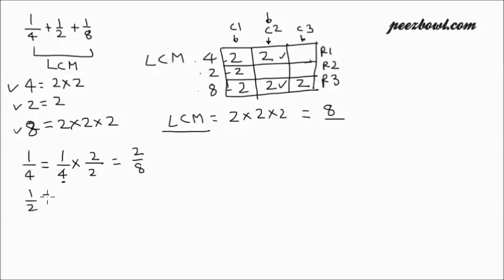Same way we will do for 1 upon 2. We are going to multiply with 4 upon 4. That way it will become 4 upon 8. And 1 upon 8, we are not going to do any change, because 8 is already in denominator.